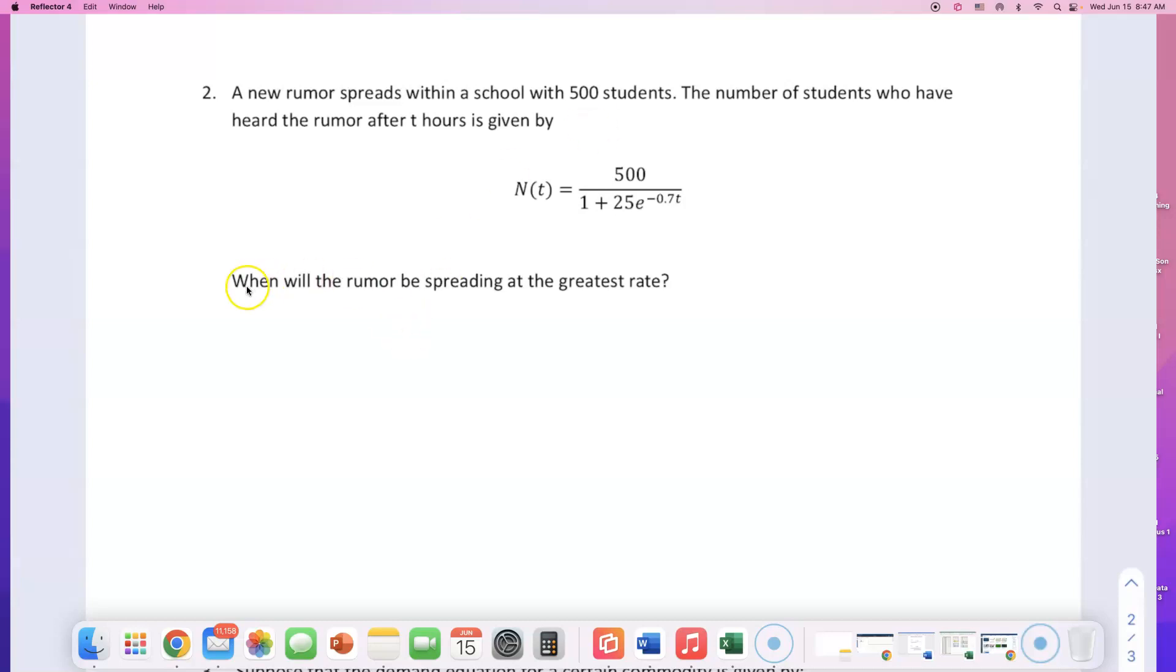So how do you find the moment the rumor will be spreading at the greatest rate? What they are asking you to find here is when will N prime of t, the rate at which the number of people who heard about this rumor per hour, is the greatest. When will this N prime of t be maximized? They're not asking us to find the maximum number of people who heard the rumor. They're asking us to find when will this rate of change be maximized.